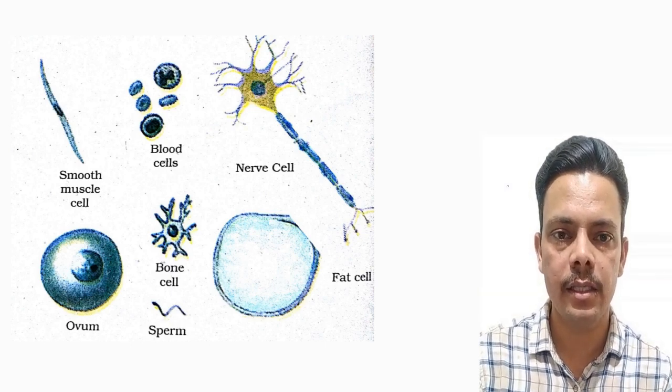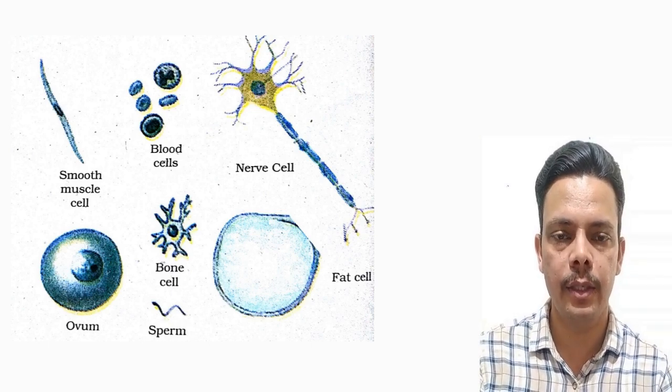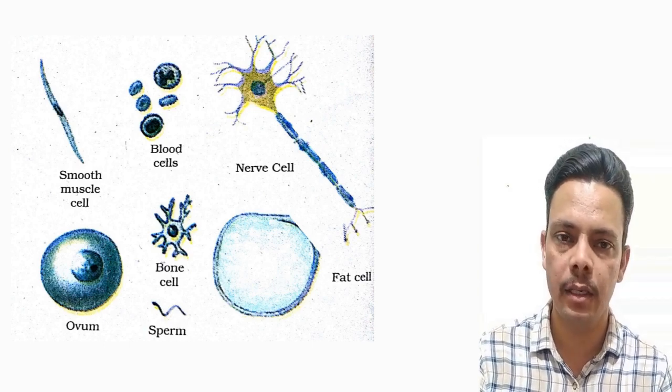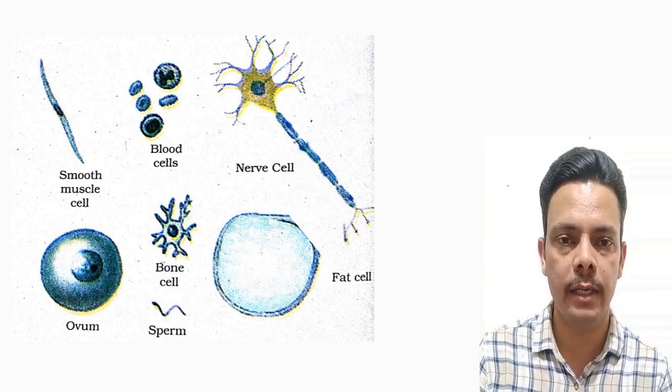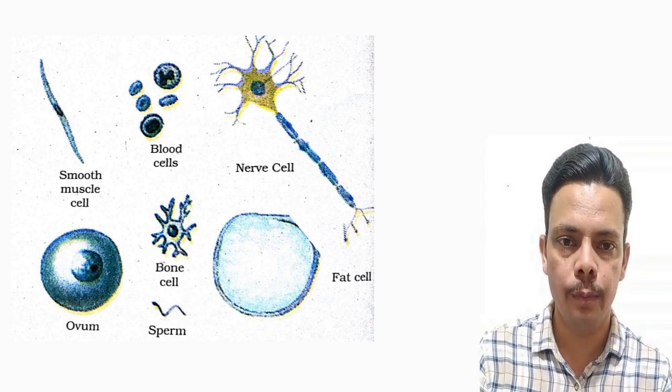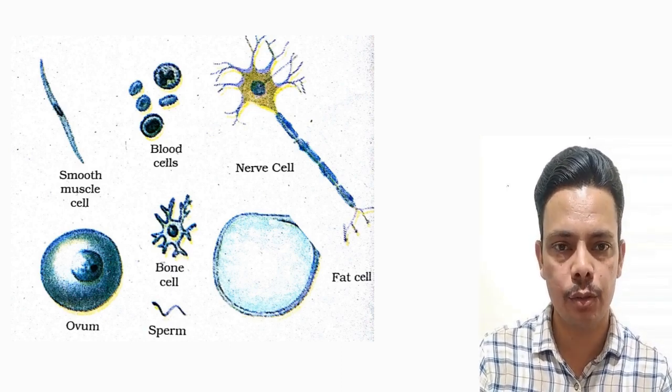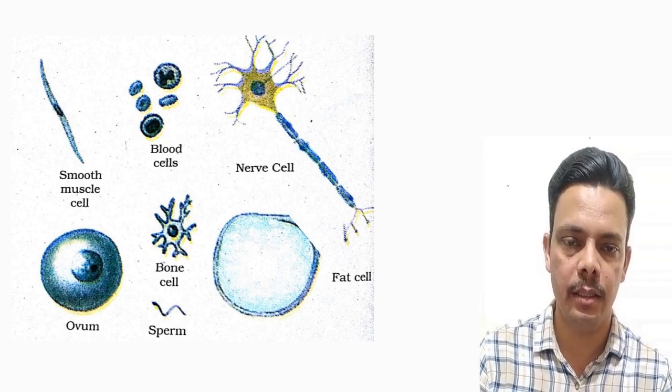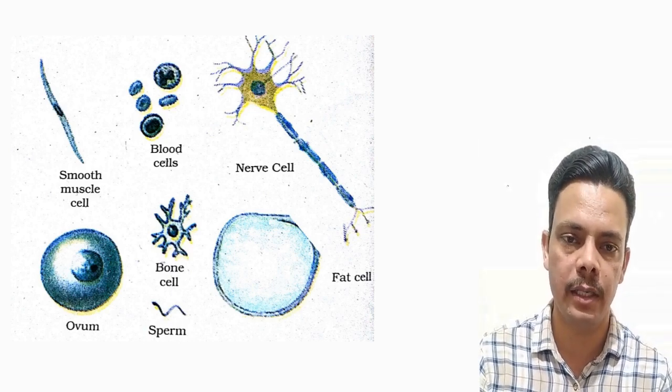Answer is no, they cannot look alike. See these cells. Observe the nerve cell, it is a lengthy cell with receptors attached because it has to receive and transfer messages. Observe the blood cells, they have different shape because they have to flow in the vessels. Observe the sperm cell, it has a tail because it helps to swim. All the cells don't have the same shape and size.